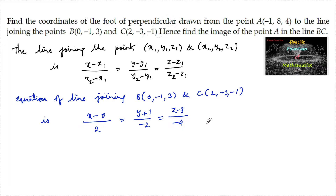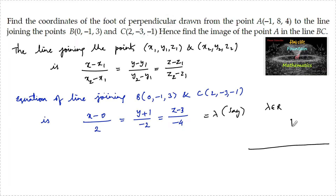Let us set each ratio equal to lambda, where lambda is a real number. A perpendicular is drawn from point A to the line BC. We call the foot of the perpendicular M, and we also need to find the image of point A, where A is (−1, 8, 4), in the line BC.